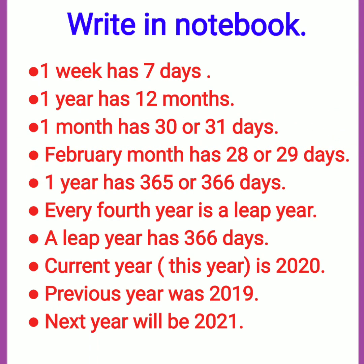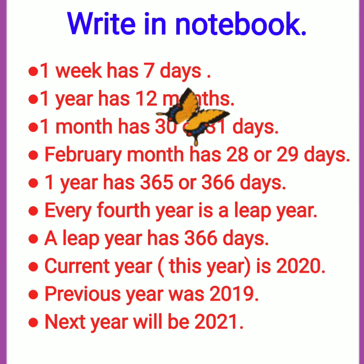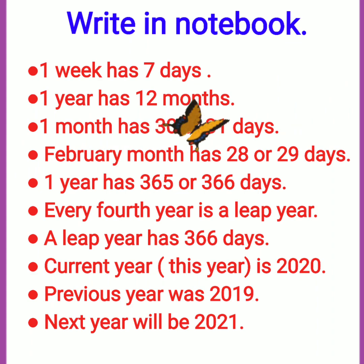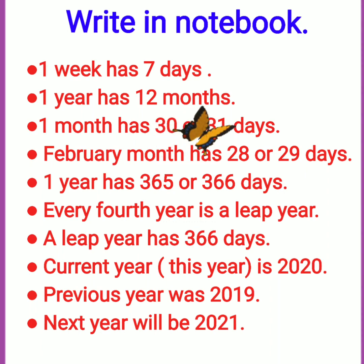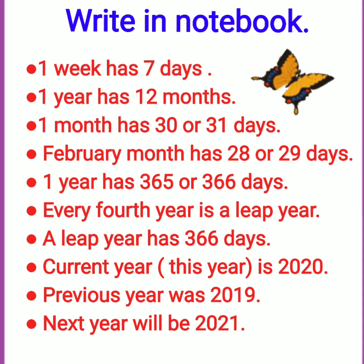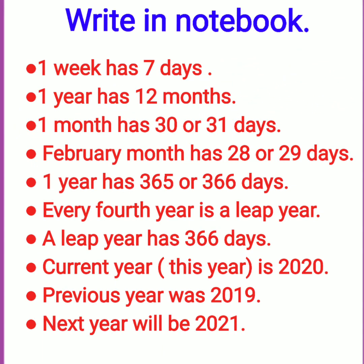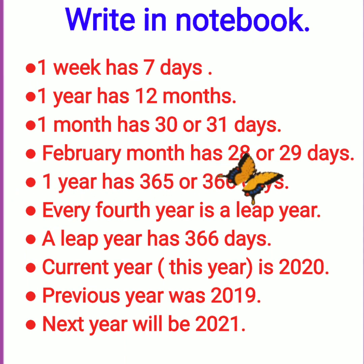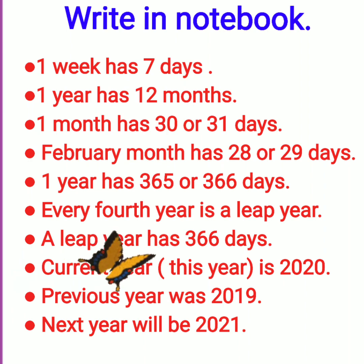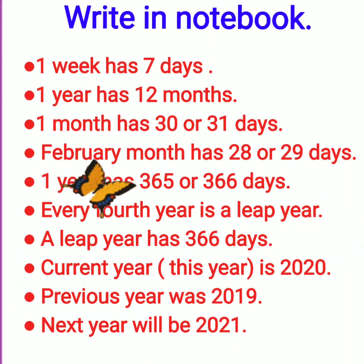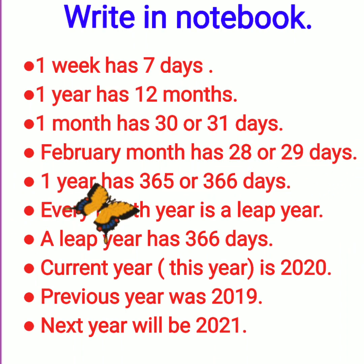Now you have to write this in your notebook. Let's read it. One week has 7 days — Sunday, Monday, Tuesday, Wednesday, Thursday, Friday and Saturday. Next: one year has 12 months, January to December. Next: one month has 30 or 31 days. Ek mahine mein ya toh 30 days hote hain ya phir 31 days. Lekin February is different from other months — February mein na toh 30 days hote hain, na hi 31, ya toh 28 days ya phir 29 days. One year has 365 or 366 days.